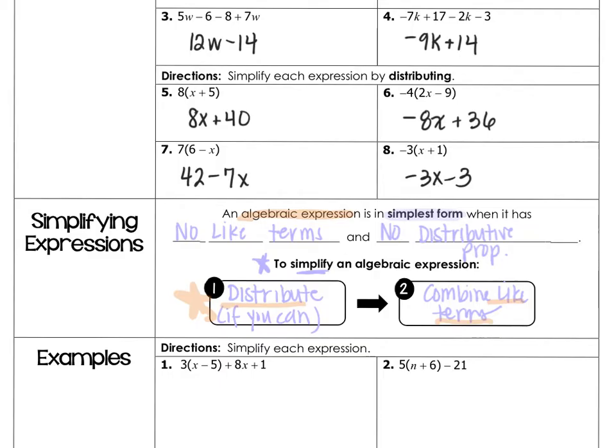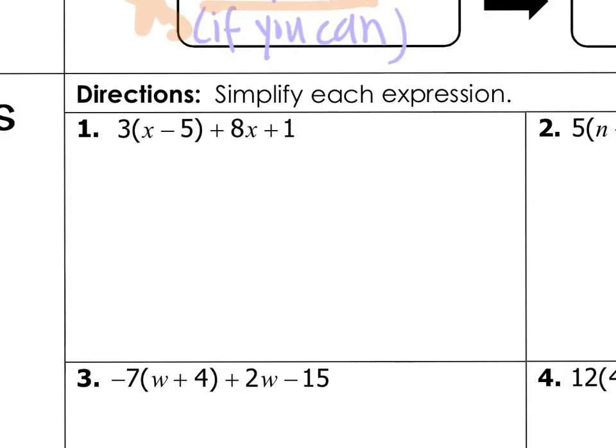Let's take a look at some examples. The directions say to simplify each expression. So, when you're simplifying, you should be thinking about distributive property and combining like terms. And the order in which you do it matters. You must distribute first followed by combining like terms. Does this problem have the distributive property? Yes, it does. It has it right here.